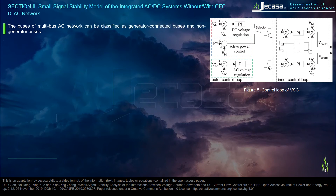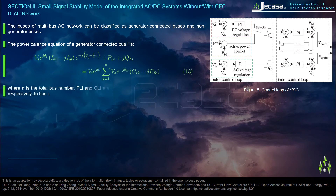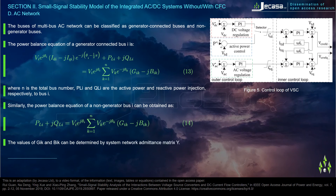The AC network model: the buses of the multi-bus AC network can be classified as generator-connected buses and non-generator buses. The power balance equation of a generator-connected bus i is given, where N is the total bus number and PLi and QLi are the active and reactive power injections to bus i. Similarly, the power balance equation of a non-generator bus i can be obtained; the values of Gik and Bik are determined by the system network admittance matrix Y.